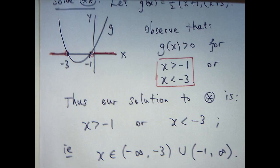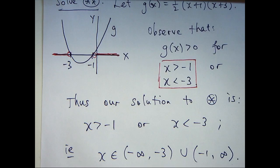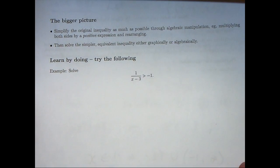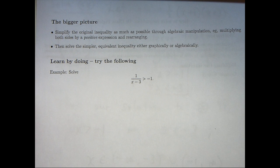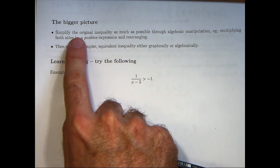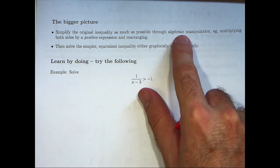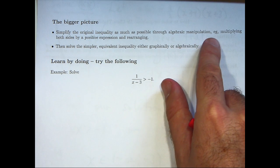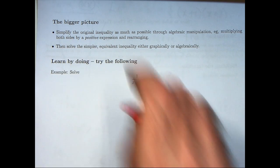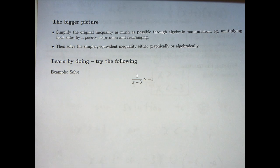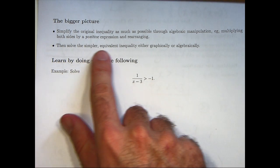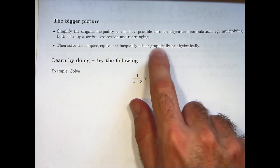Right, so let's look at the bigger picture though. What are some of these techniques that will work on general problems? Okay, well basically the idea is to simplify the original inequality as much as possible through algebra. You want to manipulate it algebraically to form something simpler. In this example I multiplied both sides by a positive expression and then rearranged. It's important if you want to keep the original inequality sign you need to multiply through by something that is positive. And the second step was to solve the simpler equivalent inequality either graphically or algebraically. I did it graphically.